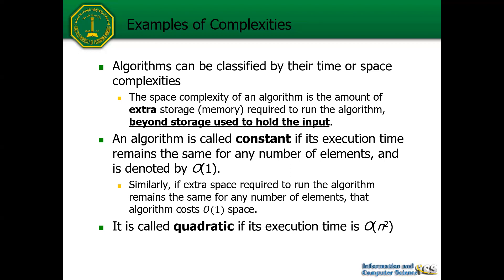Another example is quadratic complexity, which is the case when the execution time is Big O of n². If we can represent the time an algorithm takes as a function and the Big O of that function is n², we say the algorithm is quadratic.